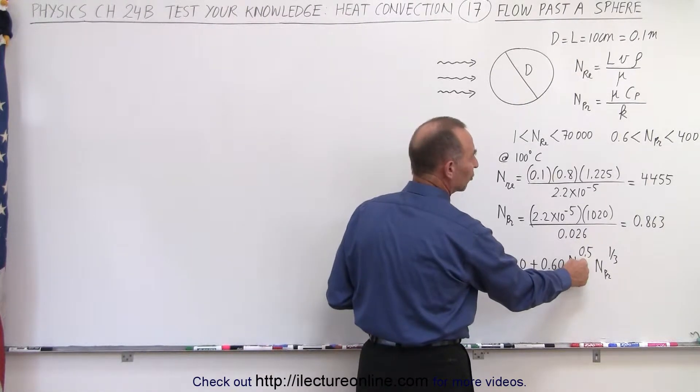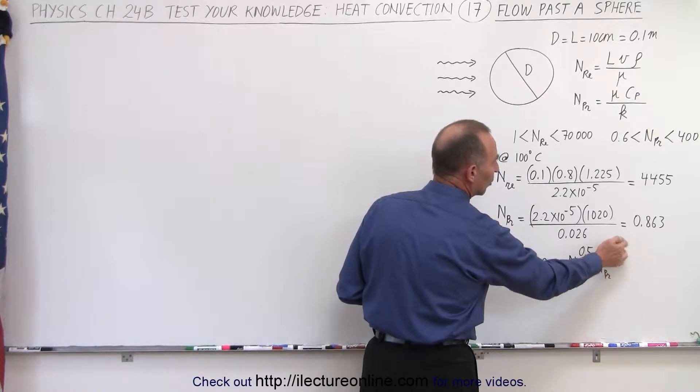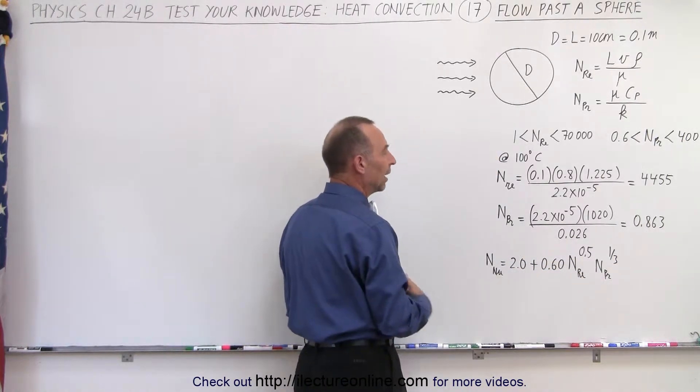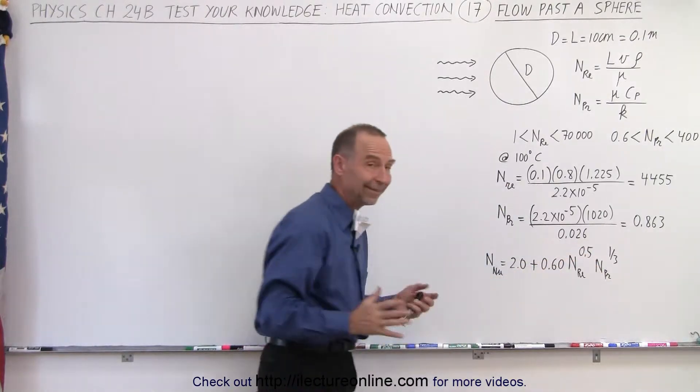Notice that we have a predetermined exponent for the Prandtl number and a predetermined exponent for the Reynolds number. And so once we plug those values in, let's see what we get.